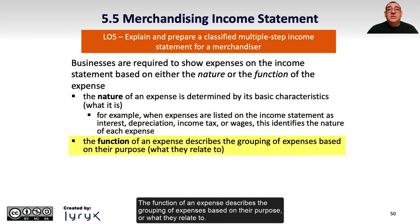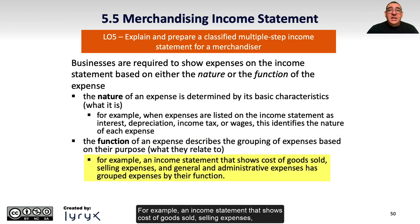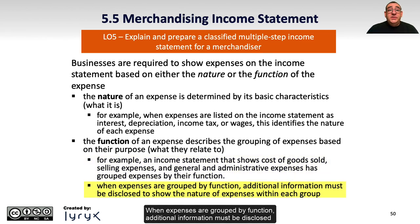The function of an expense describes the grouping of expenses based on their purpose or what they relate to. For example, an income statement that shows cost of goods sold, selling expenses, and general and administrative expenses has grouped expenses by their function. When expenses are grouped by function, additional information must be disclosed to show the nature of expenses within each group.